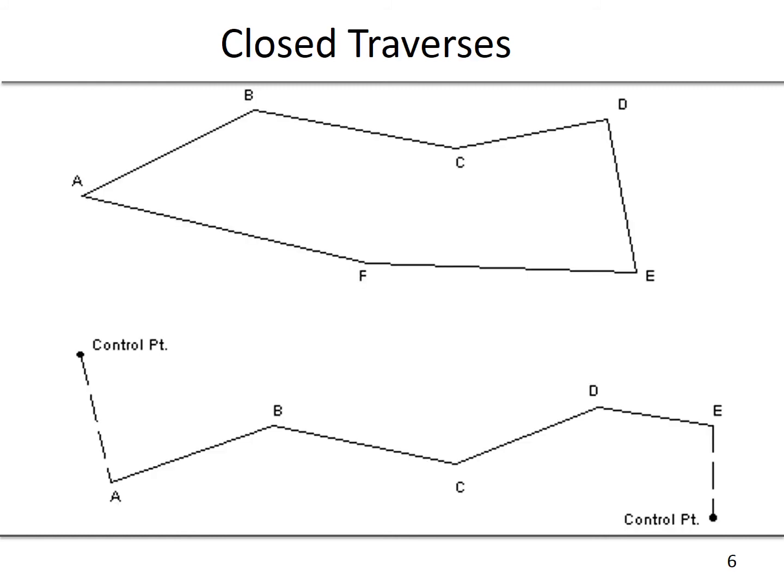We prefer to always have a closed traverse. These are each examples of closed traverses. The first one is closed because the alignment or the lines connect with each other within the stated minimum accuracy.